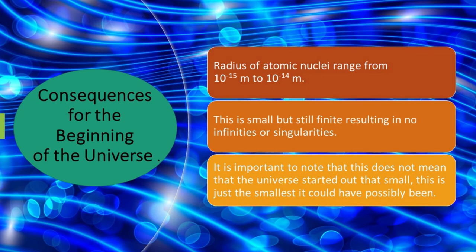The radius of an atomic nucleus ranges from 10^-15 meters to 10^-14 meters, placing these within the range of an atomic nucleus. This is small but still finite, resulting in no infinities or singularities. It is important to note that this does not mean the universe started out this small. This is just the smallest it could have possibly been.